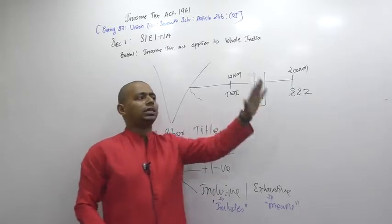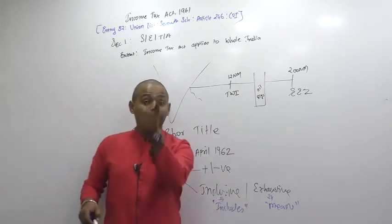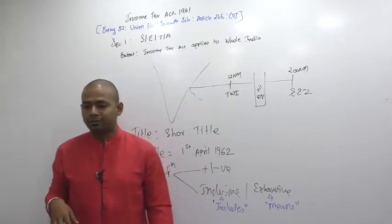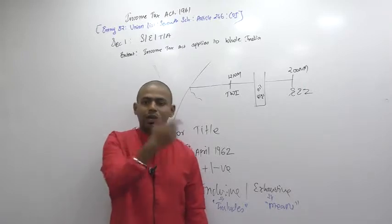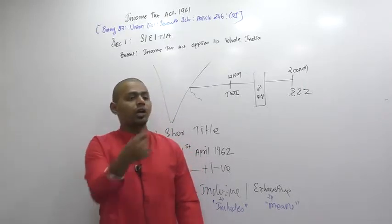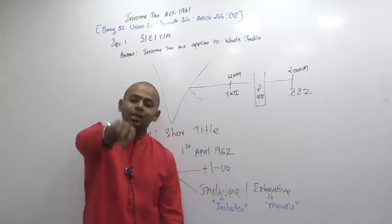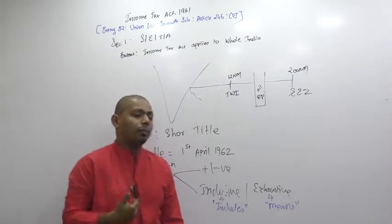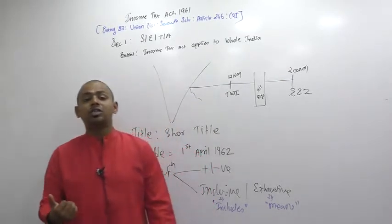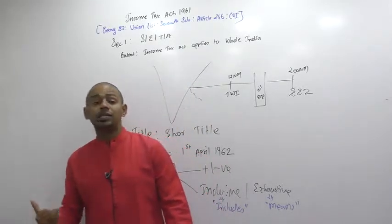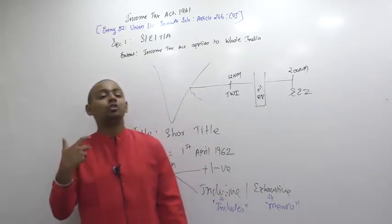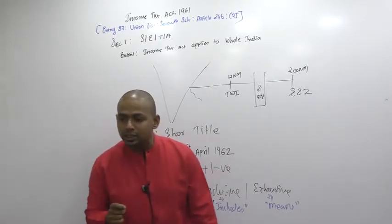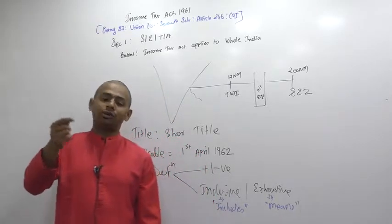For example, 'income includes this, this, and that' — something new can also be included in income. But when I say 'relative means,' it means only specifically listed persons are your relative. When I teach you the definition of relative, cousins are not your relative according to income tax, because cousins are not written in that definition. Ordinarily you consider your cousin a relative, but not under income tax. This is the impact of 'means' versus 'includes' definitions. Some definitions start with 'includes' — income includes, person includes — while others start with 'means' — assessment year means, previous year means, assessee means. The 'means' definition is the exhaustive definition.